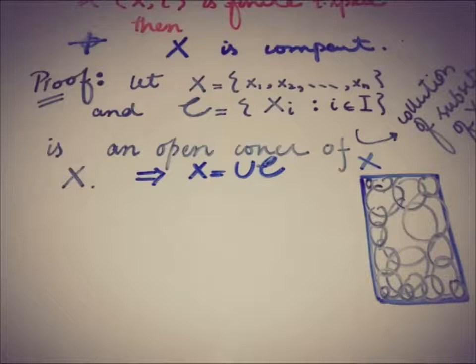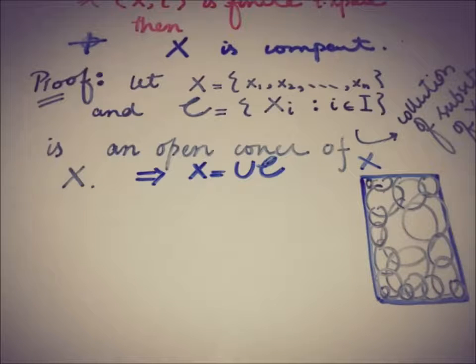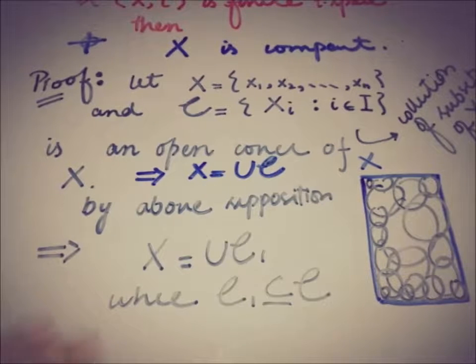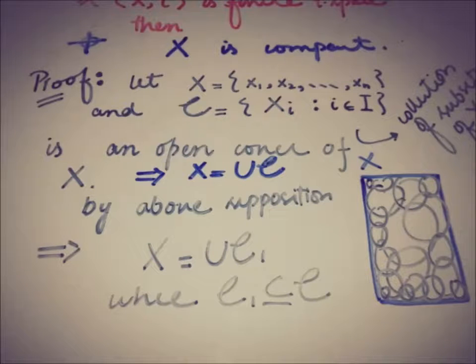This implies that x can also be covered by a subset of that collection C. That is, x equals the union of that C1, which is a collection of elements from this open cover. Because x was a finite set and C the open cover is also a finite collection, C1 is also finite.